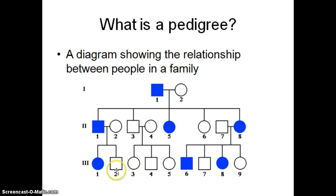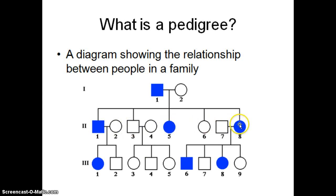Another question: generation three, number one — how many cousins do they have? They have seven cousins. Then you can ask: generation three, number three — how many aunts do they have? They don't have any on one side, but generation three, number three has four aunts total.